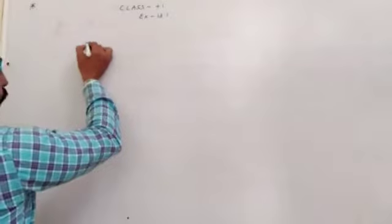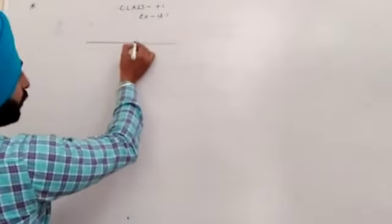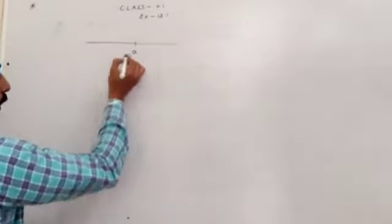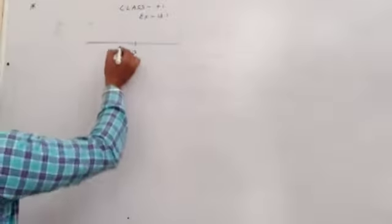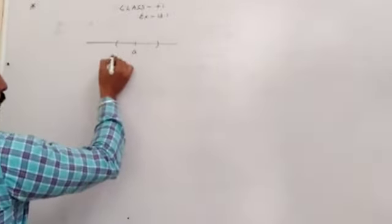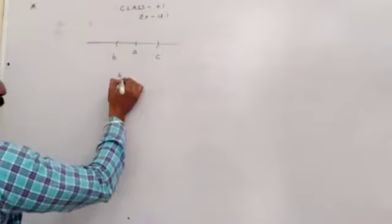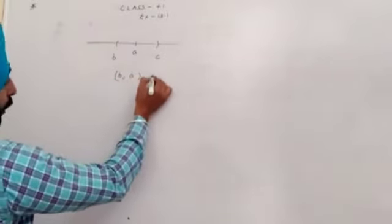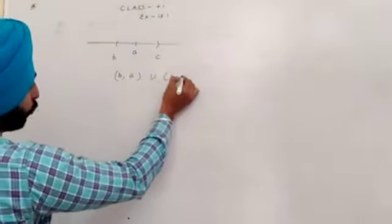Now beta, we have already discussed deleted neighborhood. Suppose beta A is a point. Then B, C, any open interval which contains A, is a neighborhood of A. Then B to A, open interval B to A union A to C, is called a deleted neighborhood.